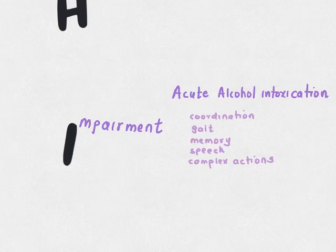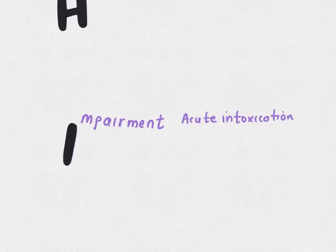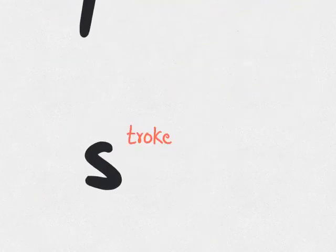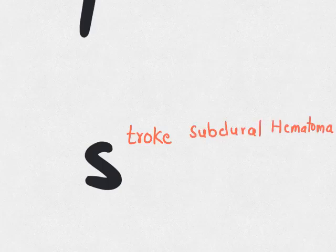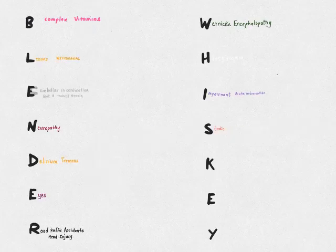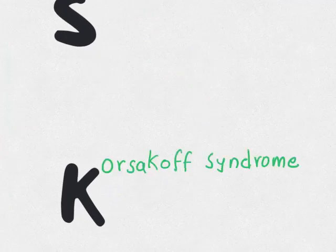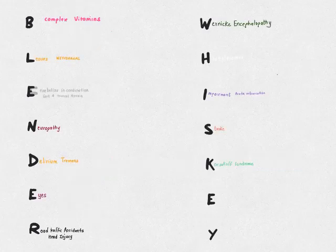S is for stroke — alcohol itself is a risk factor for various strokes. Also, head injury causes subdural hematomas. Repeated attacks of Wernicke's encephalopathy give rise to defects in memory — retrograde and anterograde amnesia with confabulations. This is Korsakoff syndrome.